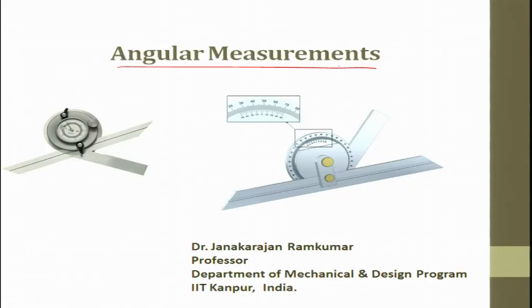Looking at angular measurement instruments — you can see there is a flat plate or a flat base which is a reference for the entire instrument. This reference should butt against another reference which is perfect, then only you can start measuring the angles. If the reference surface is not butting against a given standard reference, these instruments will give error because it is a relative measurement which they take.